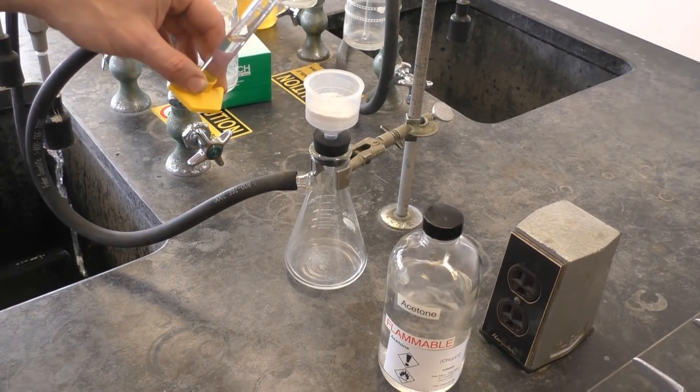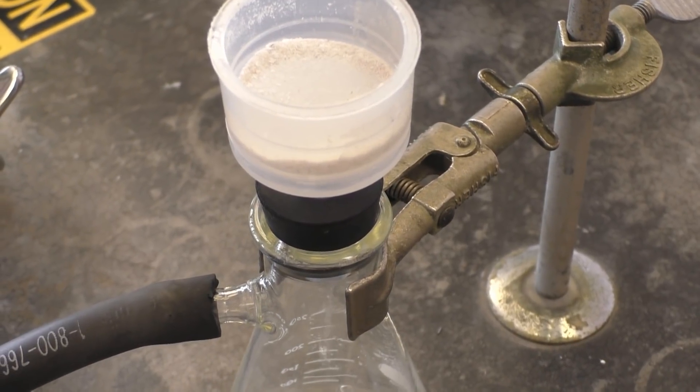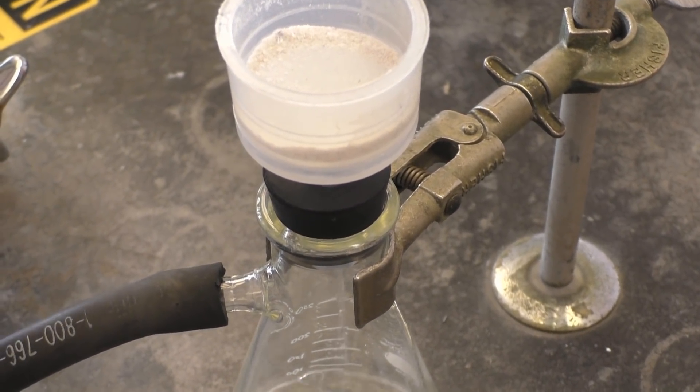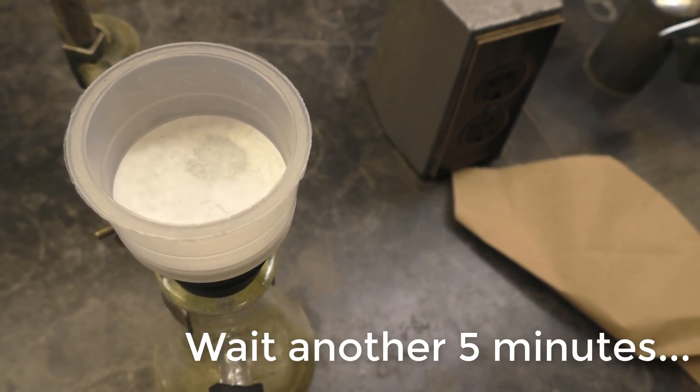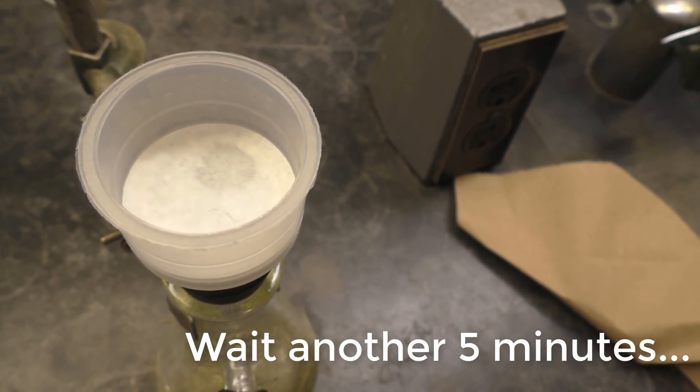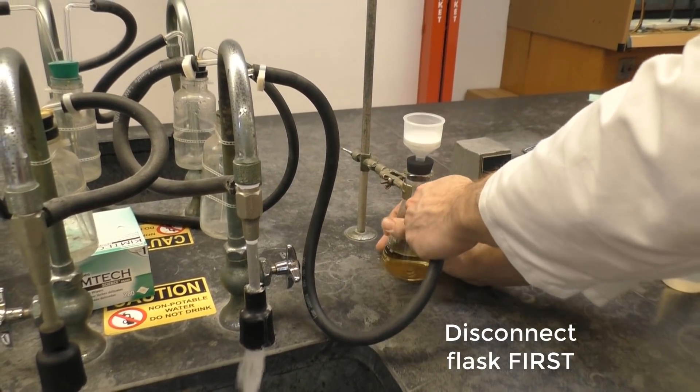To do this, first let the suction pull air through your solid for at least five minutes. Then, still with suction, very slowly pour seven milliliters of acetone over your precipitate. Repeat this again with another seven milliliter portion of acetone. Then pull air through the solid again using the aspirator suction for another five minutes.